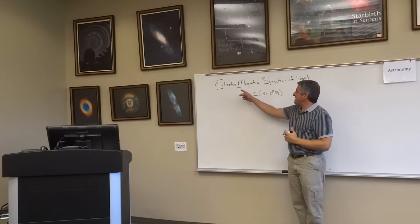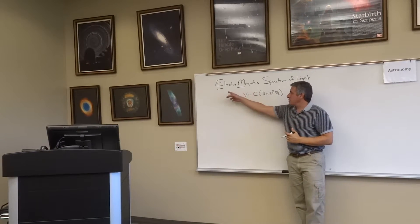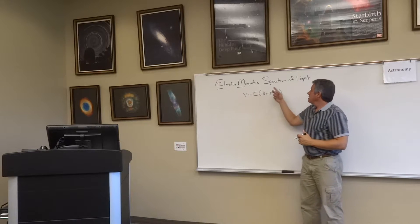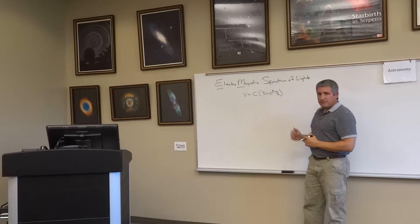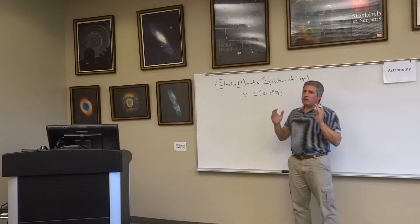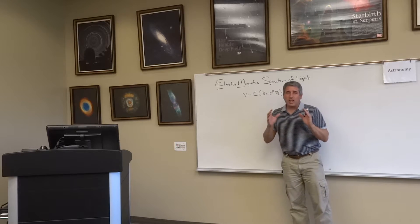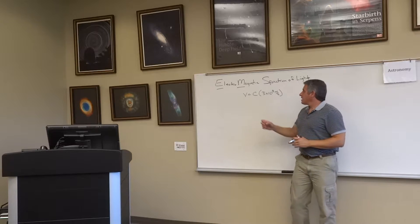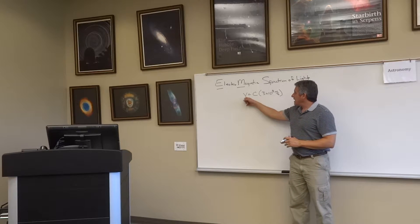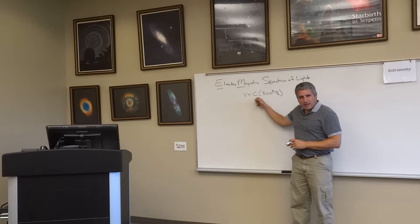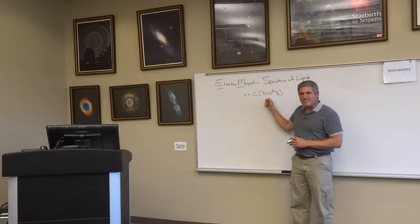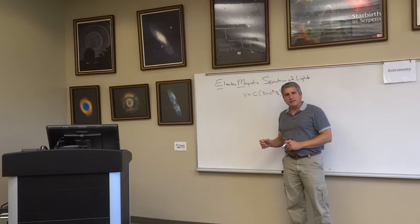Light is some sort of electromagnetic disturbance, so it's often referred to as the EM spectrum. What do all types of light have in common? They all travel at a velocity equal to c — three times ten to the eighth meters per second — that's seven laps around the Earth in one second.